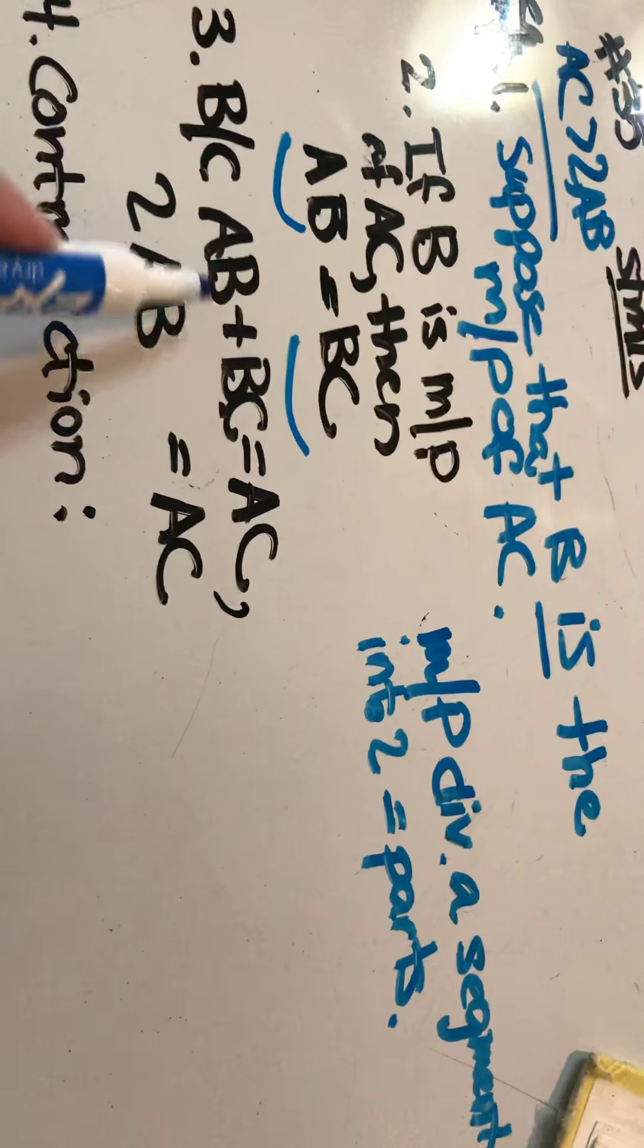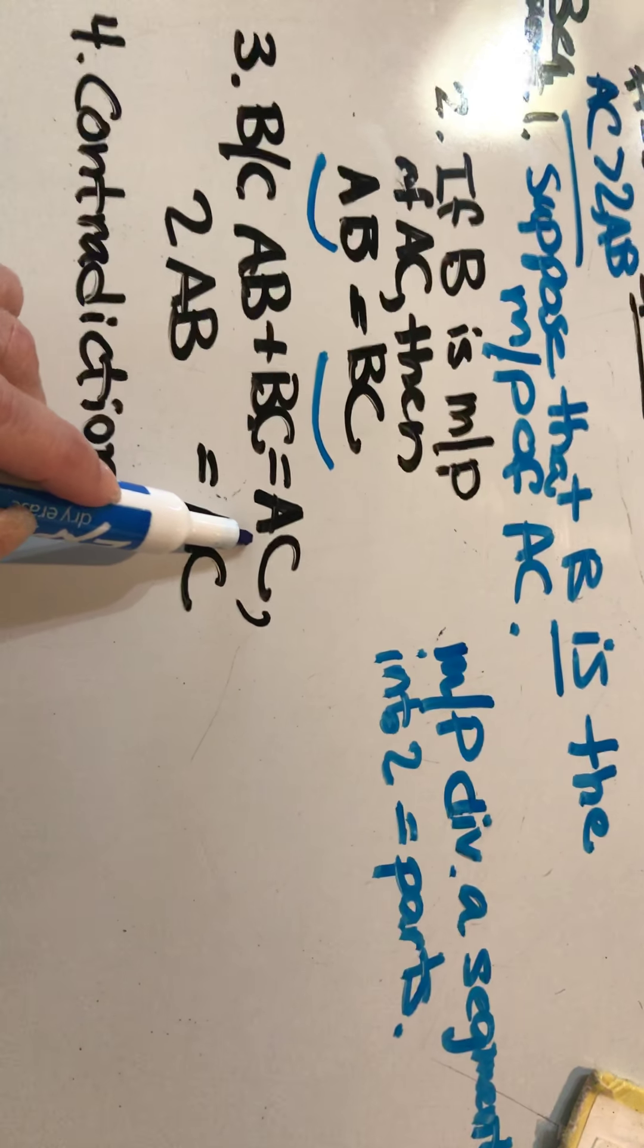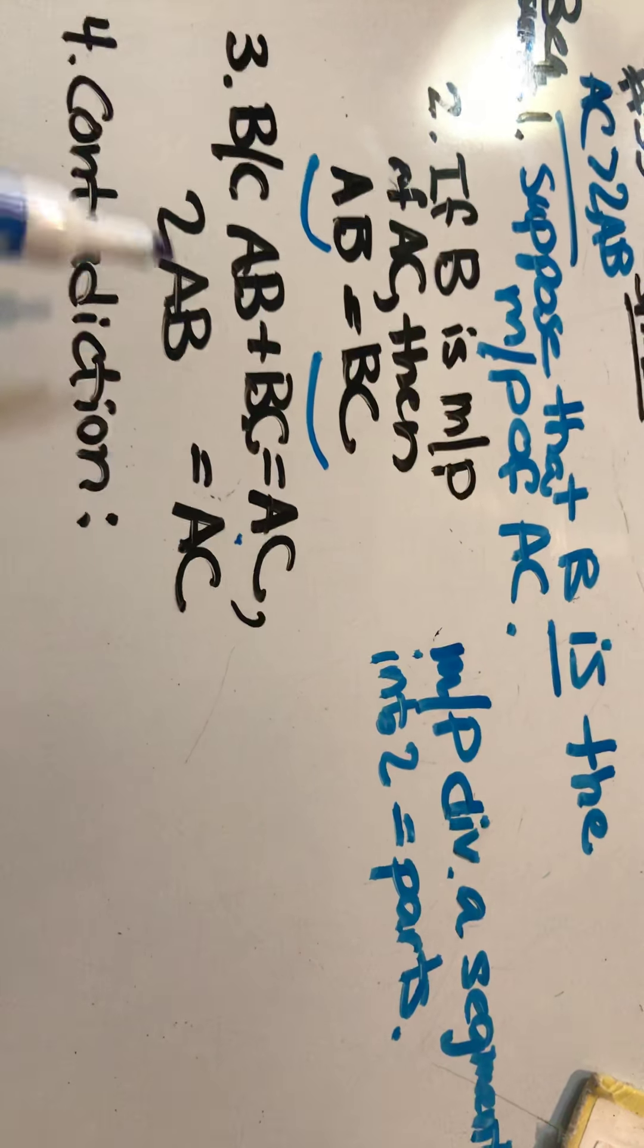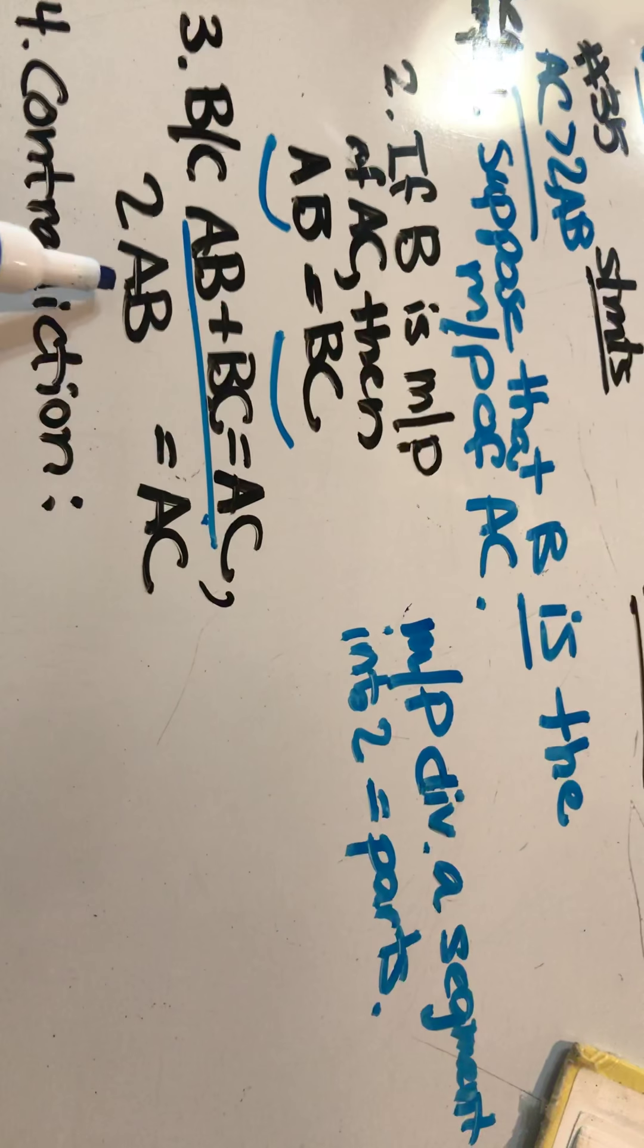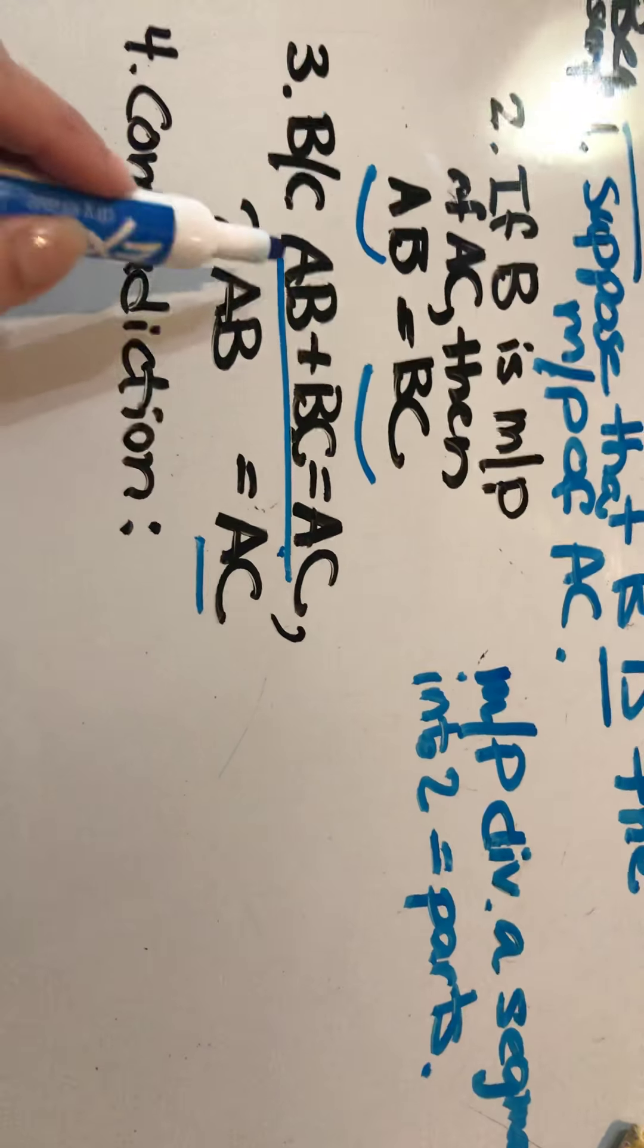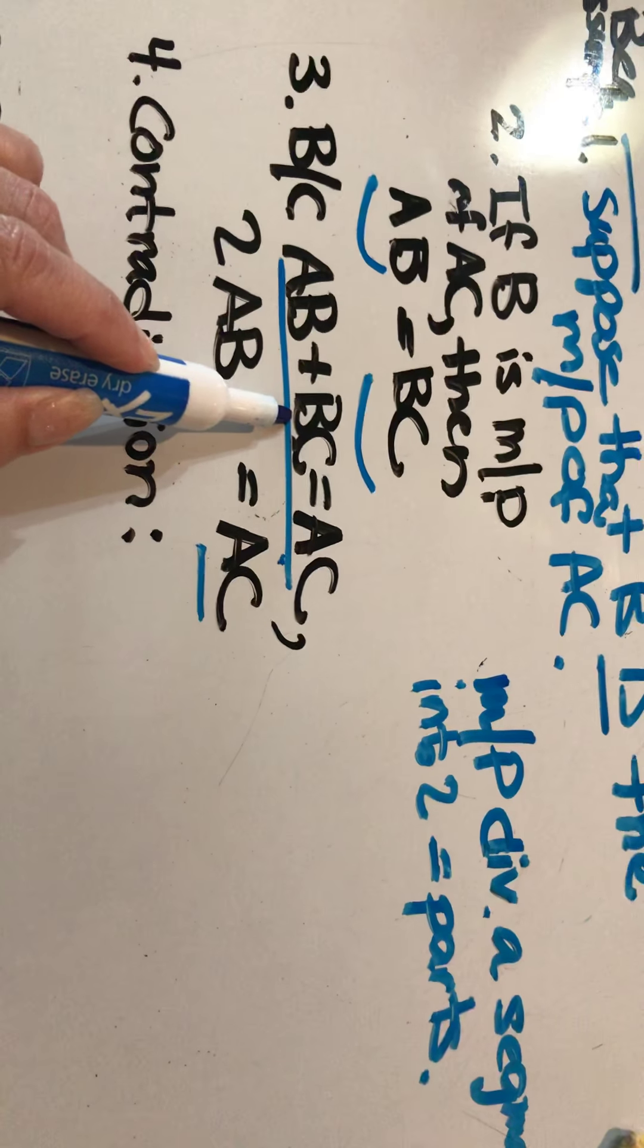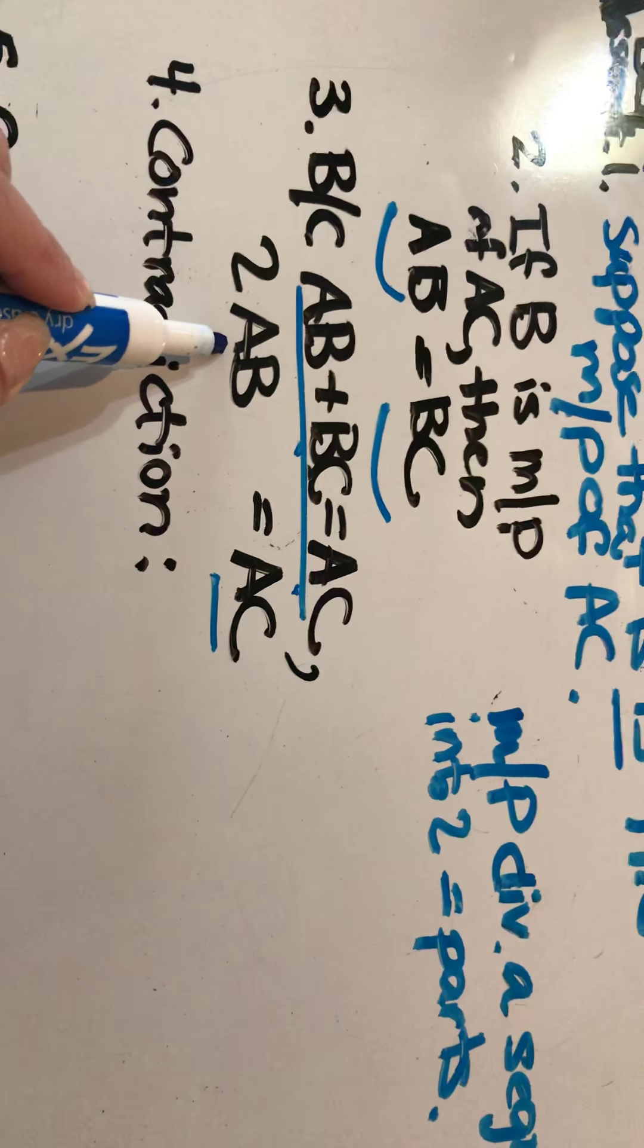Now, because AB plus BC equals AC, so that part is given, then why, how do I get from this statement to this statement? So AC doesn't change on this side of the equal sign, but this side, AB plus BC is now 2AB. And how did they do that?